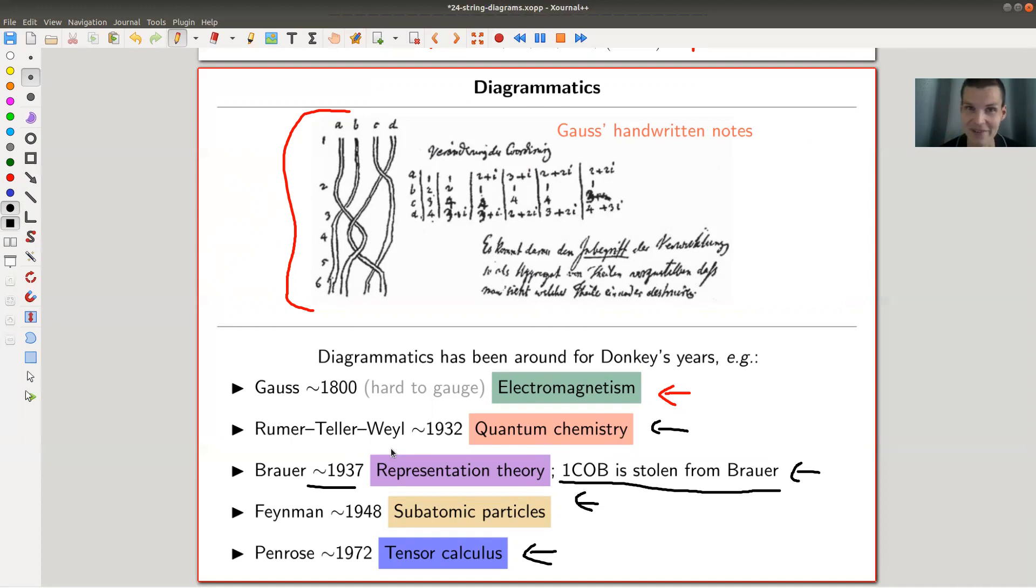the 1930s, categories were not known in the 1930s, but still kind of a natural object. Anyway, this slide is just to give you some historical background on diagrammatics. And in the end,